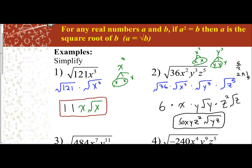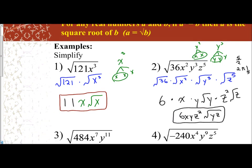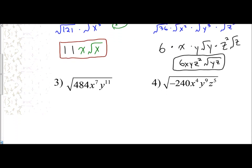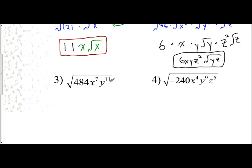Now, if you can't quite understand the shortcut yet, we're going to be practicing it in the next few problems. I have the square root of 484 x to the 7th y to the 11th. The first thing you always want to do is check whether the coefficient is a perfect square, because if it is, you can just take the square root of it. I break it apart: square root of 484, square root of x to the 7th, square root of y to the 11th. The square root of 484 is 22.